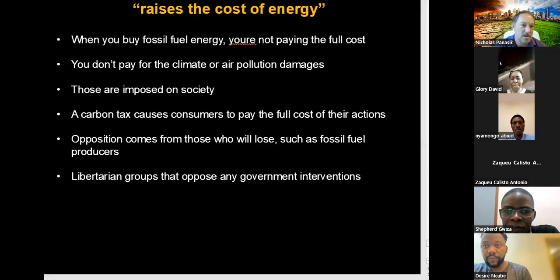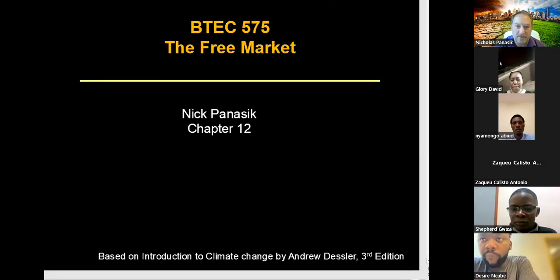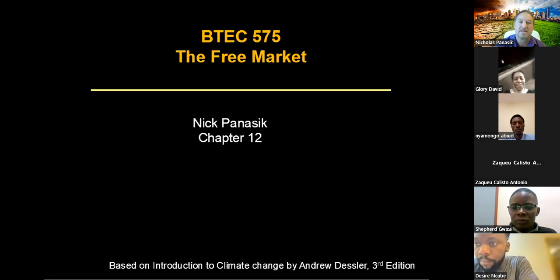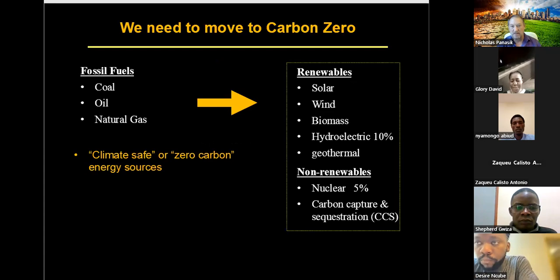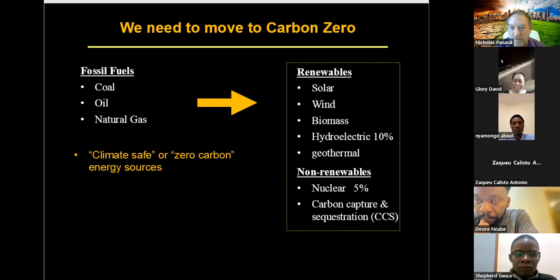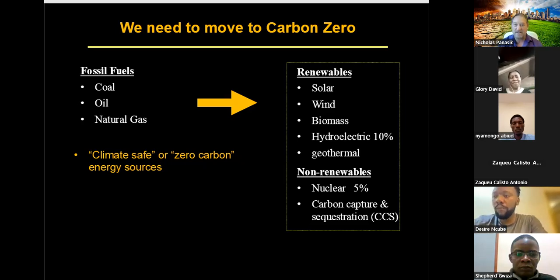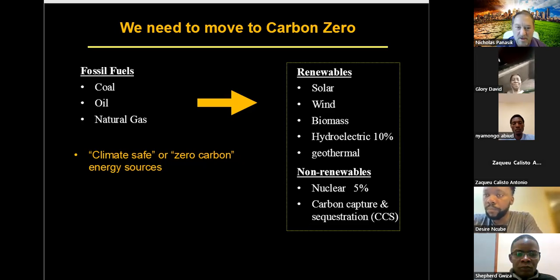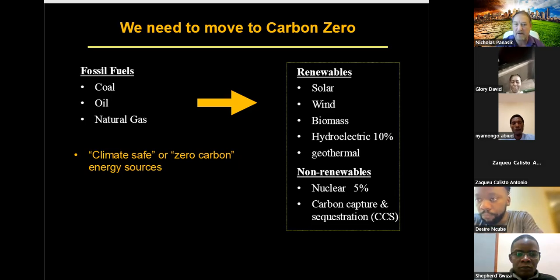So where are we today? We were still talking about the free market and now we're going to be talking about free market responses. Remember our goal is we need to move to carbon zero — we're pumping 10 gigatons of carbon into the atmosphere every year, which is causing our current warming. We need to switch to renewables now, and the big question is: how do we get everybody to do it?